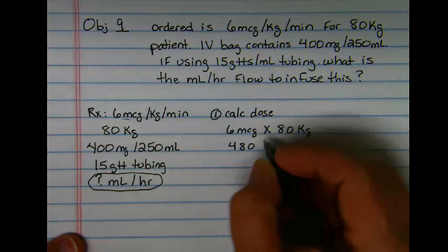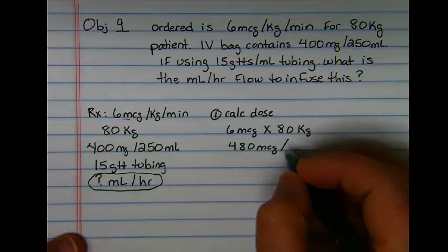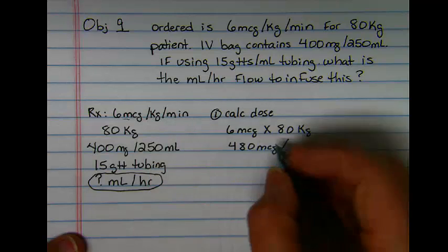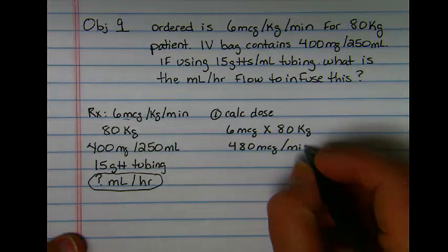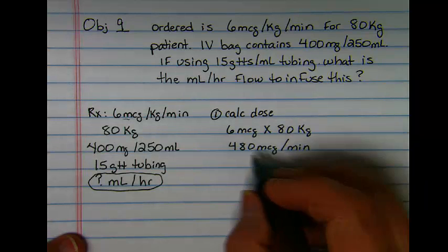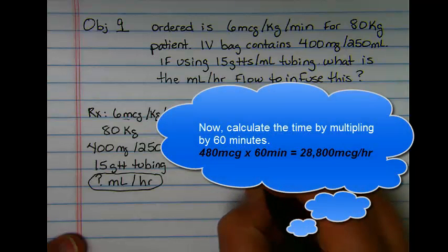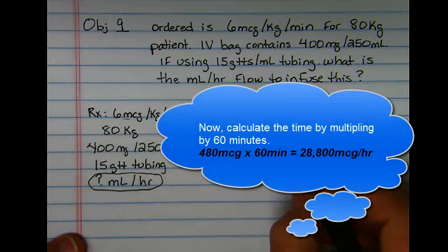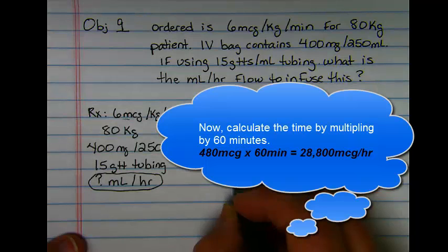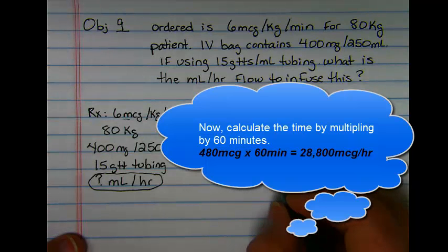that's 480 micrograms per, and it's still per minute because we haven't done anything to address time, only the weight. So the next step is I'm going to take this amount and I'm going to multiply that by 60 minutes to figure out my hour rate. This is 28,800. It's still micrograms, but now it's per hour.